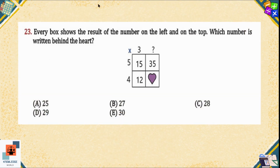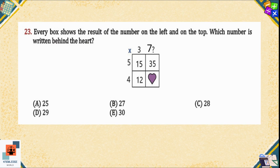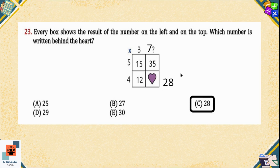Question 23: Every box in the grid shows the result of multiplying the number on the left by the number on the top. Which number is written behind the heart? We can see that five times three equals 15, and four times three equals 12. The unknown column header satisfies five times something equals 35 — so five times seven equals 35. The number under the heart is four times seven, which equals 28. Option C is the correct answer.